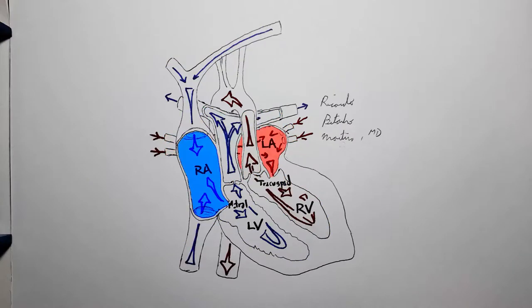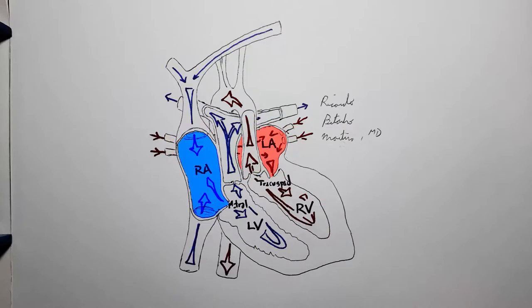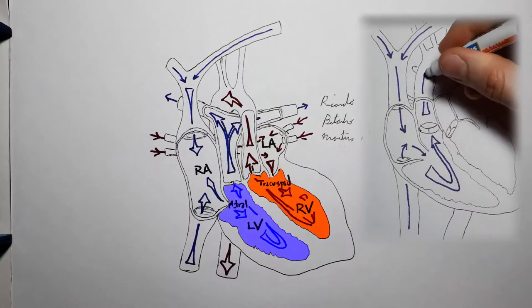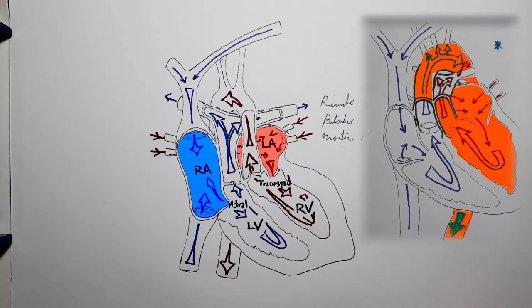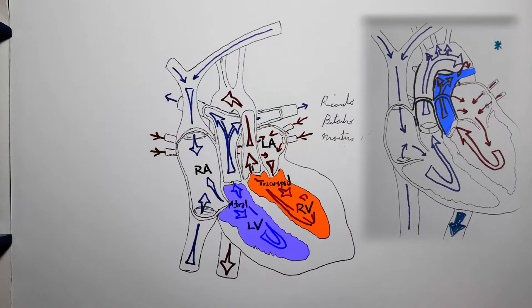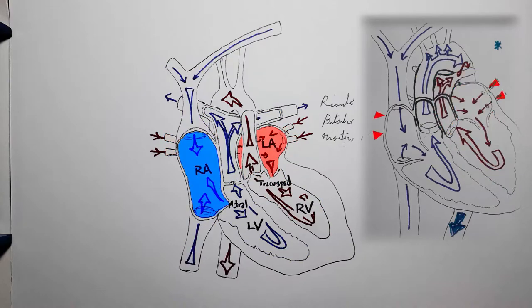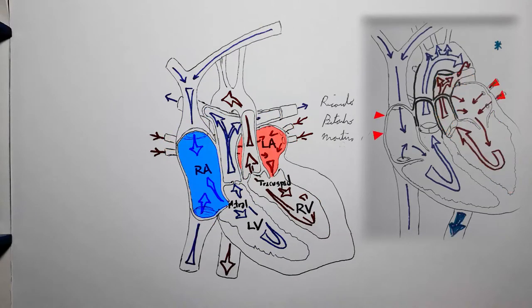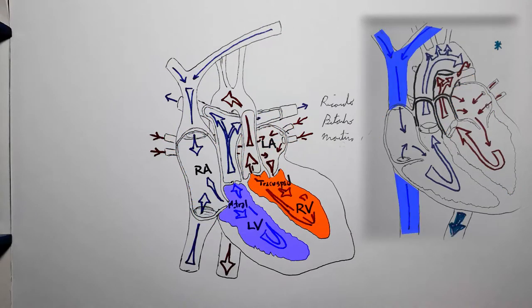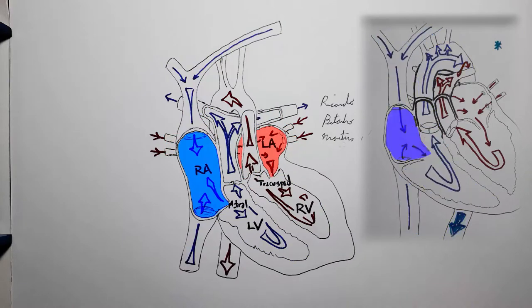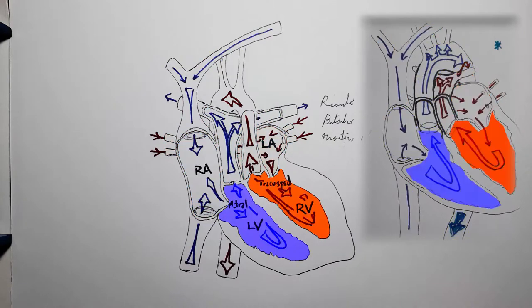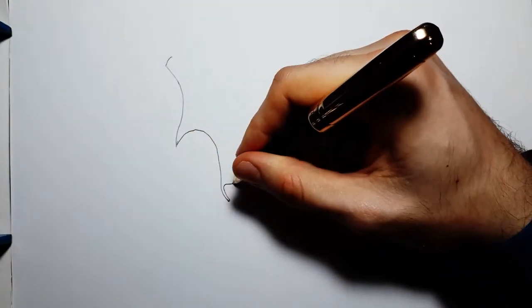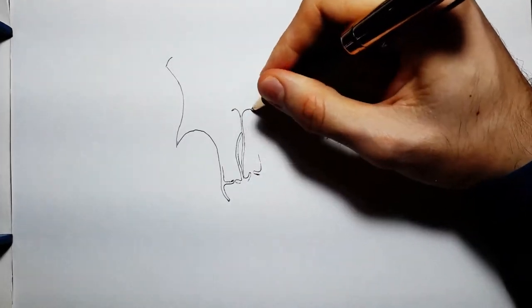We've previously talked about dextro TGA, which is a far more common and classical condition. In D-transposition of the great arteries, we had each of the great vessels arising from the wrong ventricles — the pulmonary trunk from the left ventricle and the aorta from the right ventricle — a phenomenon called ventricular arterial discordance. They are mismatched. In LTGA we are also going to have ventricular arterial discordance.